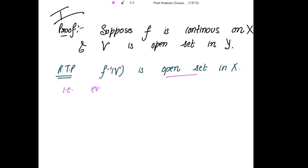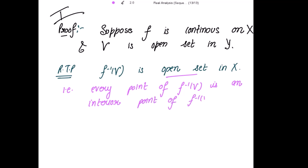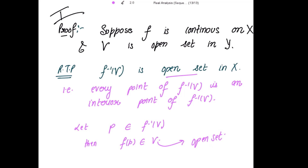So that is to prove: every point of f inverse V is an interior point of f inverse V. Let's take one point p from f inverse V, then f(p) belongs to V. But V is an open set, and a point belonging to an open set means that point is an interior point of V. So f(p) is an interior point of V.